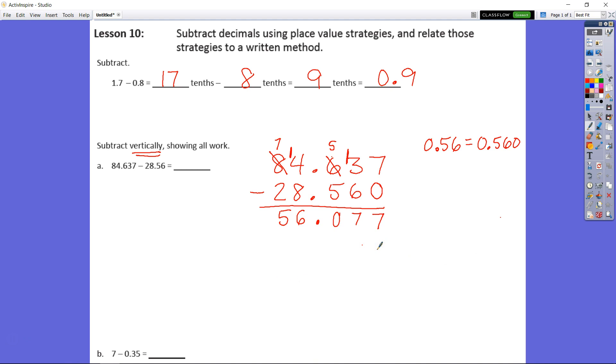Take a look at B here. A lot of people got confused. Remember B is saying 7, the whole number 7, minus 35 hundredths. So if we're doing that we look at our hundredths place, we have 0 hundredths take away 5 hundredths.